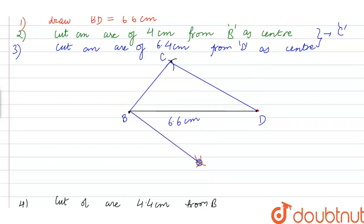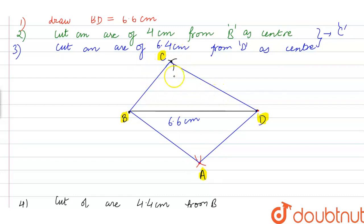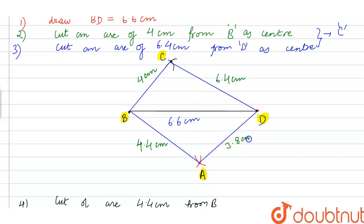We join this intersection point with point B as well as point D to obtain all four sides of our quadrilateral. This point is point A. The four vertices of our quadrilateral are A, B, C, and D. The measurements are: BD = 6.6 cm, BC = 4 cm, CD = 6.4 cm, AB = 4.4 cm, and AD = 3.8 cm. This is the way to construct a quadrilateral with the given parameters.